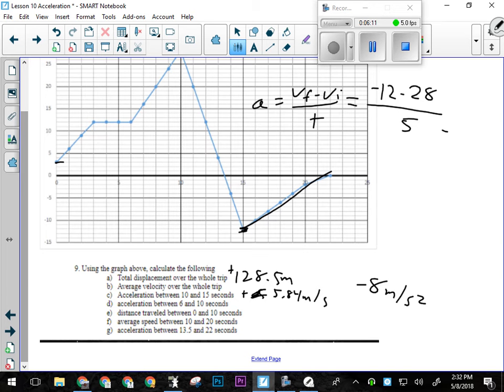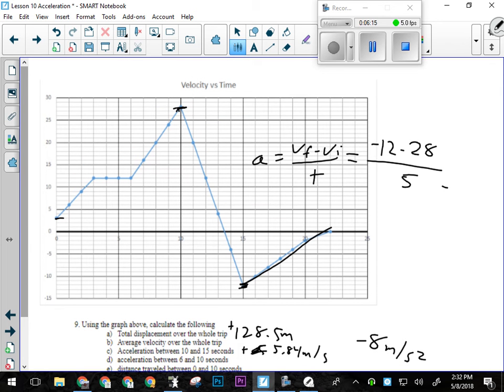And then we have acceleration between 6 and 10 seconds. So we're going to do the same thing. Same formula. We're just going to have different numbers, because it's between 6 and 10 seconds now. So from 6 seconds to 10 seconds. So at 10 seconds, again, we're moving at 28. At time 6 seconds, we're moving at 12. All right, so 28 minus 12 over 4 seconds. So that's 16 over 4, 4 meters per second squared. And this time it's positive.